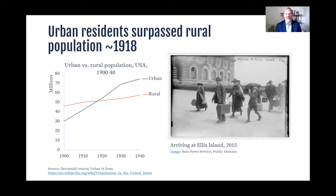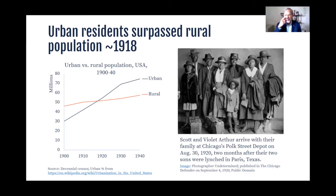Millions of immigrants were fleeing oppression and religious persecution in Europe from the 1890s to the 1920s. Most of them came through Ellis Island in New York City, as was true of these arrivals in 1915. Also, over a million Black people fled from violence and economic oppression in the South, so that by 1930 alone, the Black population had grown by more than 40% in the northern states.